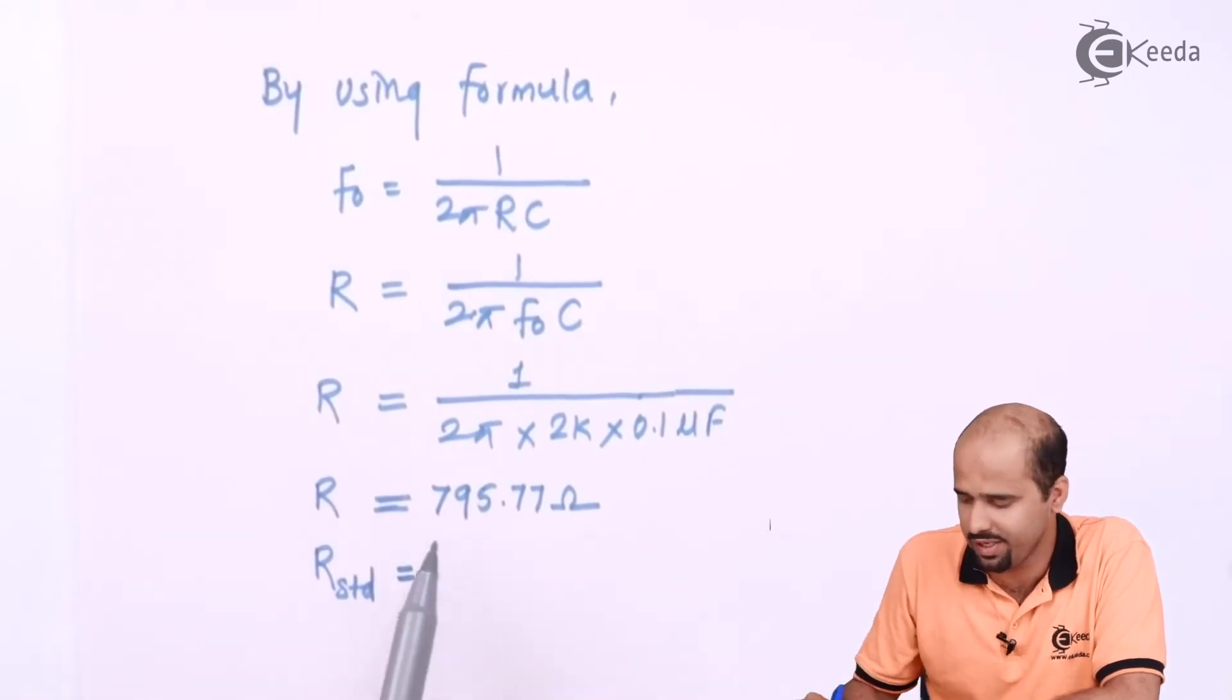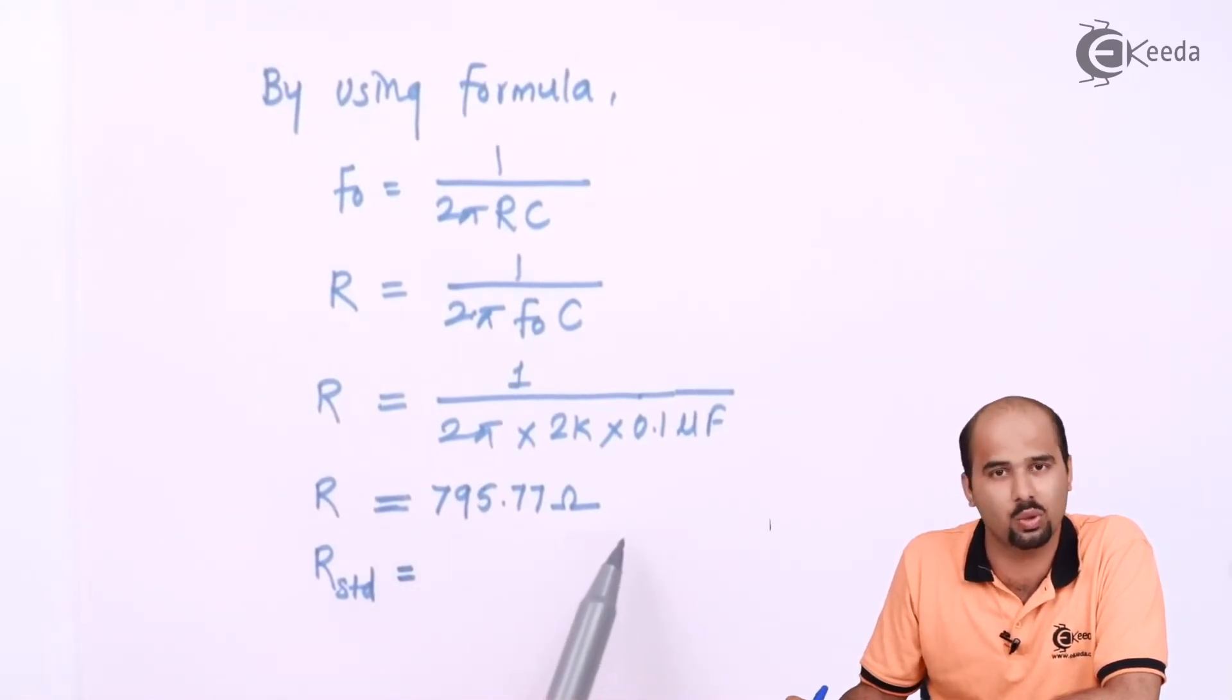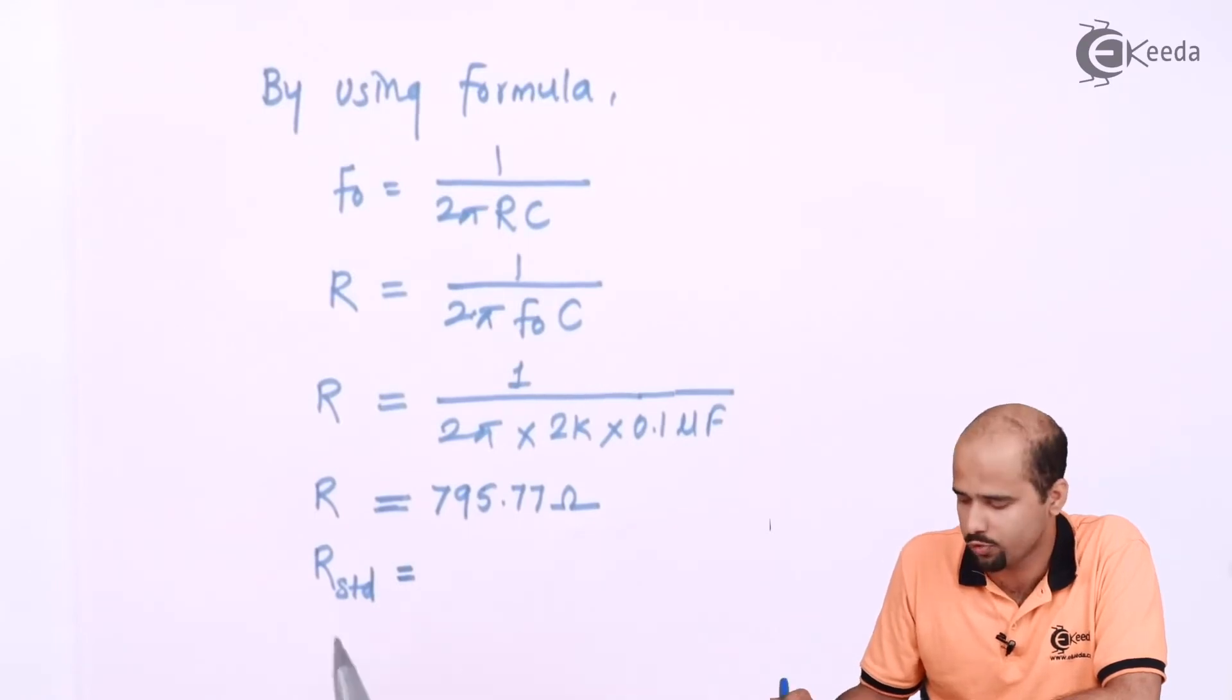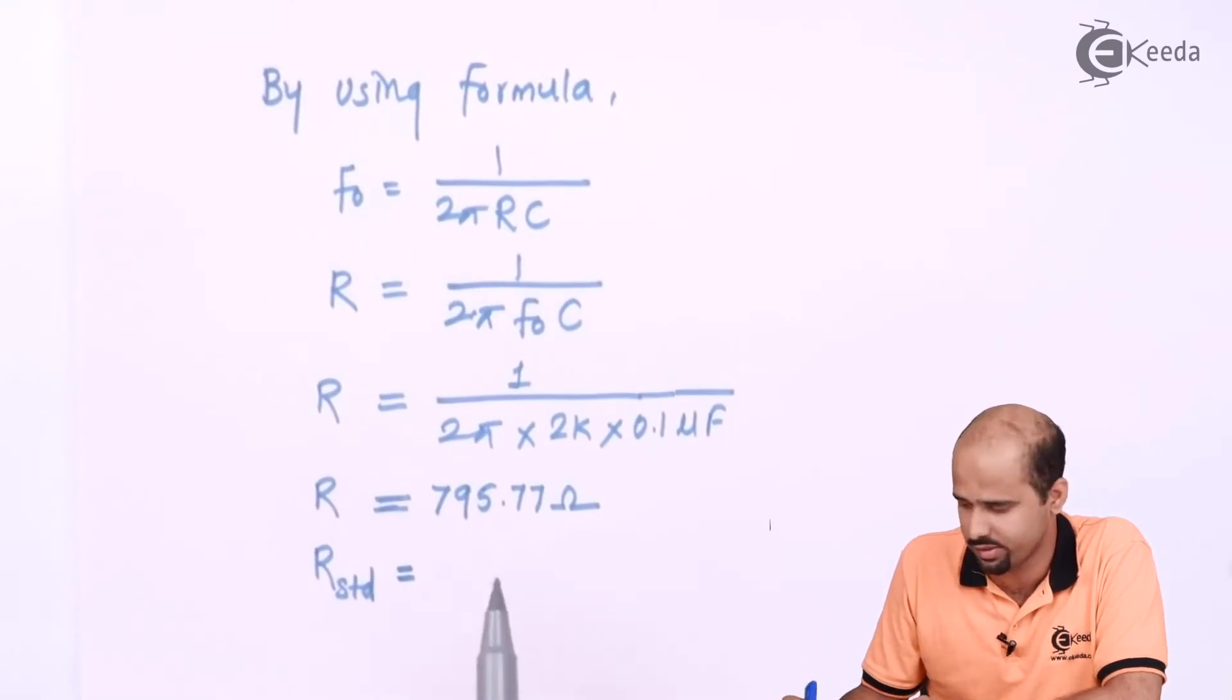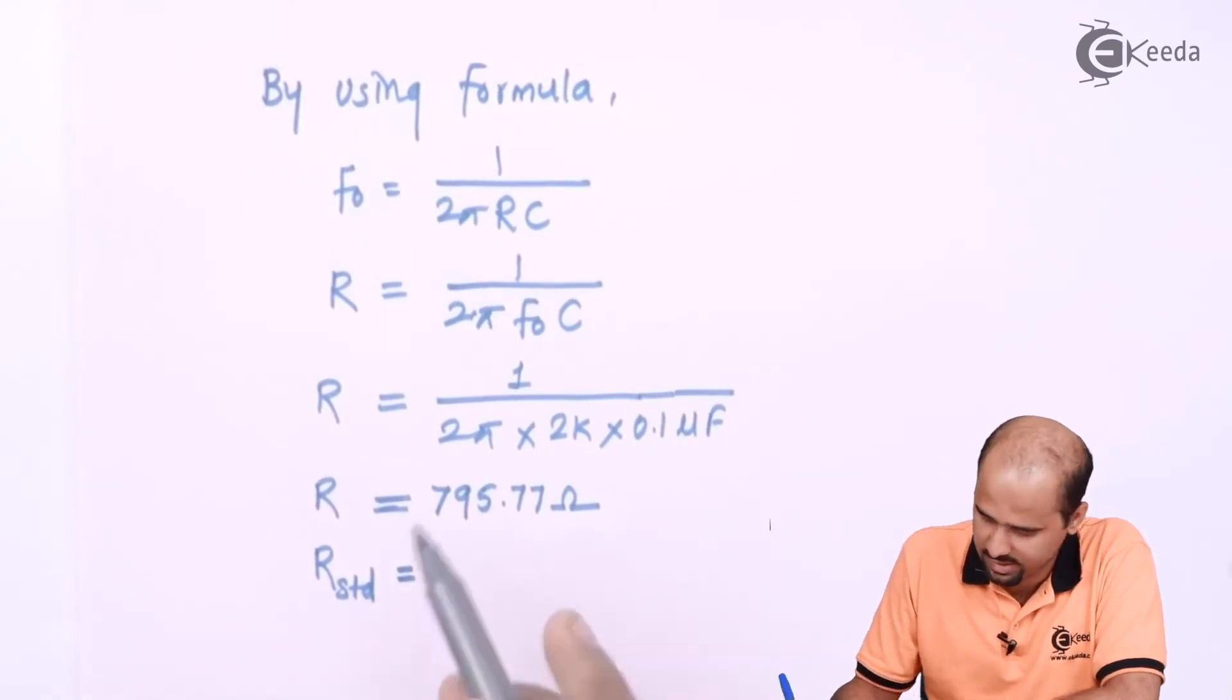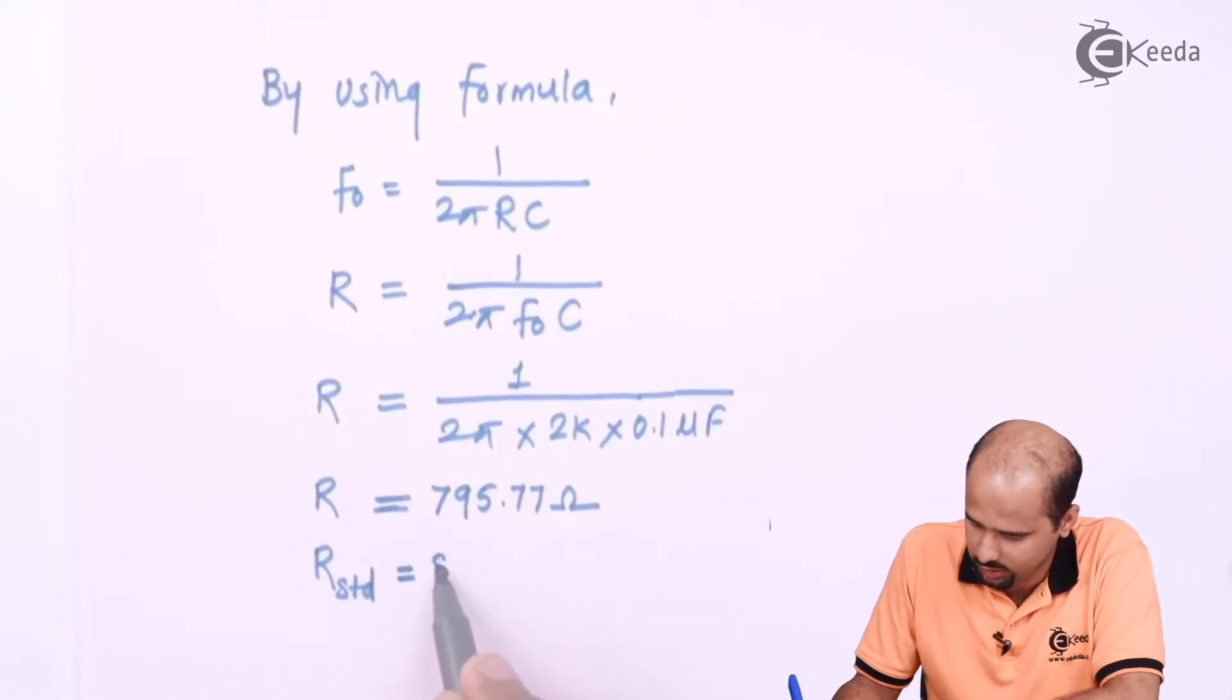So for that we have to move for the alternative resistance. So what we will be dealing - let's have the value of 820 ohm.